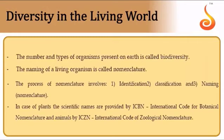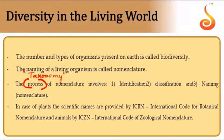Biodiversity refers to the enormous number and variety of organisms existing on this planet. To study this enormous diversity, we need a streamlined process called taxonomy. The principles and processes associated with taxonomy include: first, identifying the organism; second, classifying the organism; and third, naming it — a process referred to as nomenclature.